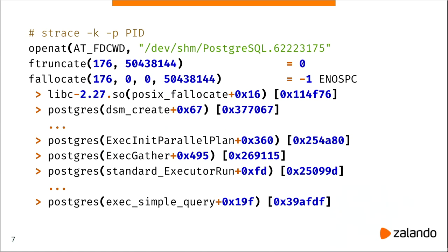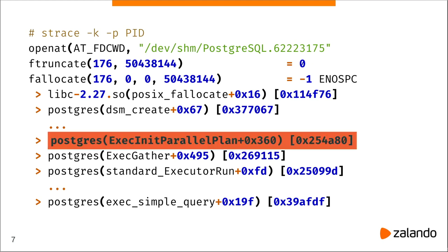Strace is a tool that allows you to show all the system calls your application is making. In modern versions of strace, there's a nice flag `-k` that allows you to show the full stack trace from the application for each system call. We attach to the PostgreSQL backend, start tracing, and see: we open the shared memory segment, try to allocate something, and fail. We came from `ExecInitParallelPlan` — PostgreSQL is trying to do something in parallel. Every parallel worker requires a separate shared memory segment. Docker by default limits /dev/shm to 64 megabytes, and for large analytical queries that's sometimes not enough.